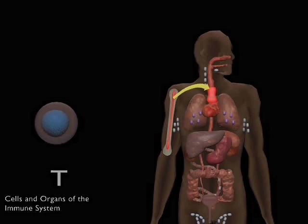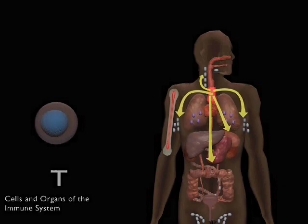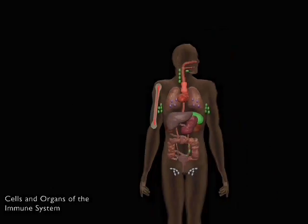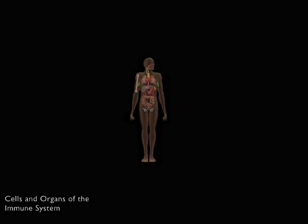There is considerable cell traffic between the various lymphoid tissues. You can learn about the cells, the lymphoid organs, and the patterns of leukocyte migration in a unit identified by this icon.